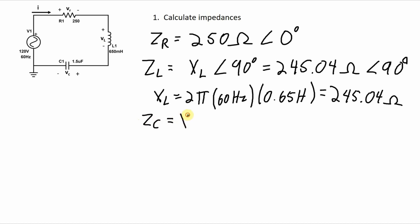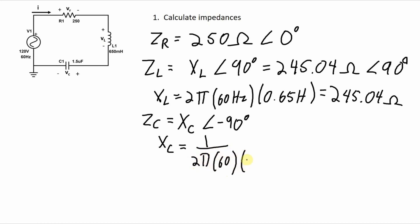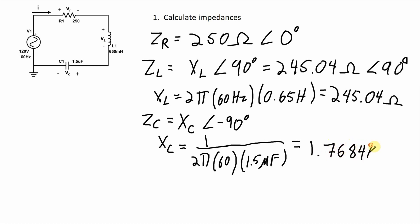The impedance of the capacitor is 1 over 2πfc — so 1 over 2π times 60 hertz times 1.5 microfarads. Plugging that into a calculator, we get 1.7684 kilohms. So the impedance of the capacitor is 1.7684 kilohms with a phase angle of minus 90 degrees.